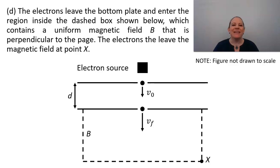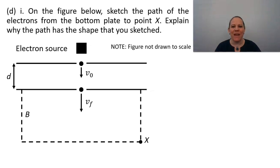Part D, the electrons leave the bottom plate and enter the region inside the dashed box shown below, which contains a uniform magnetic field B that is perpendicular to the page. The electrons leave the magnetic field at point X. And note that our figure here is not drawn to scale. Part one. On the figure below, sketch the path of the electrons from the bottom plate to point X. Explain why the path has the shape that you sketched.